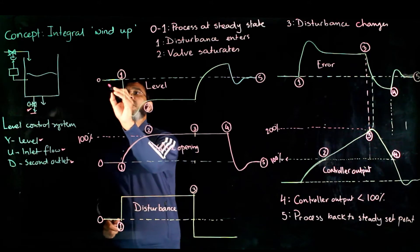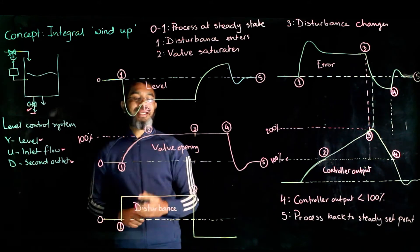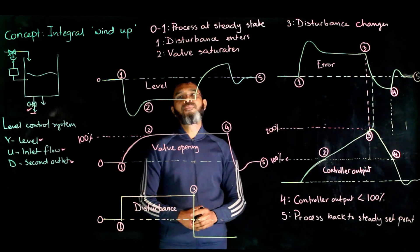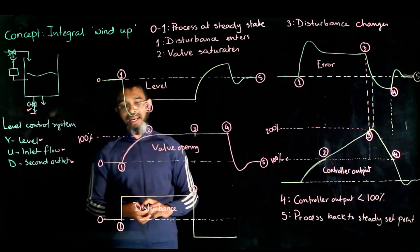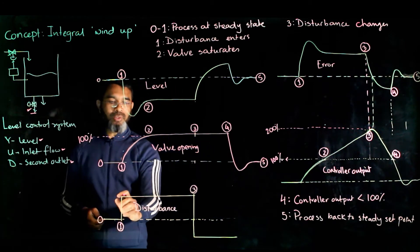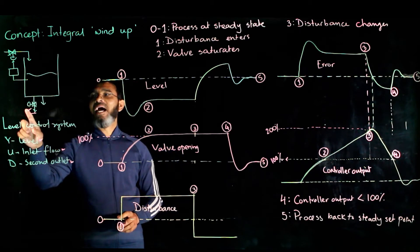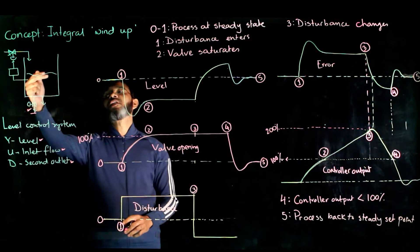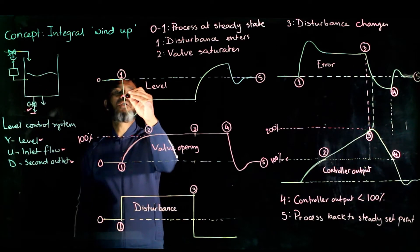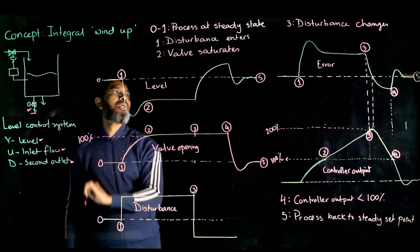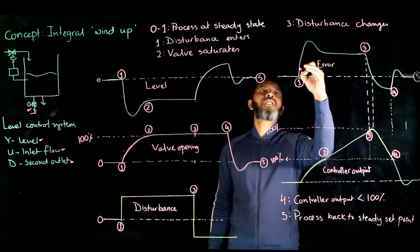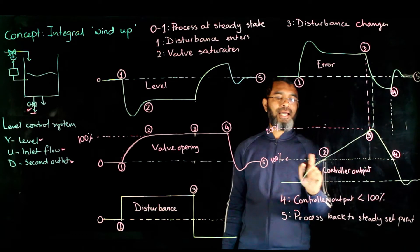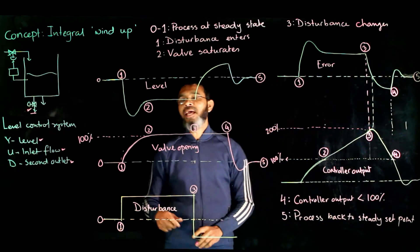At instant 0, everything has a steady value. From 0 to 1, the level, the valve opening, the disturbance, and error all have steady values. At instant 1, the disturbance enters the process — the second outlet is increased, causing the level to start decreasing. As the level decreases, the error signal keeps increasing and the controller starts calculating a control action, so the valve begins to open.